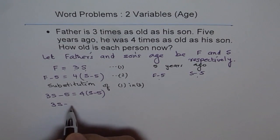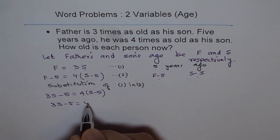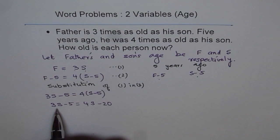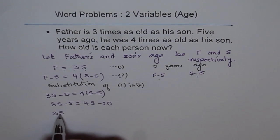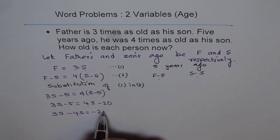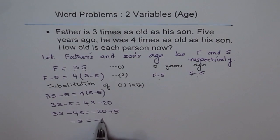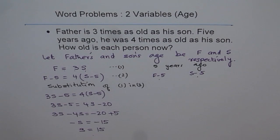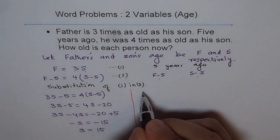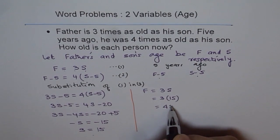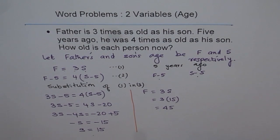Let's rearrange. 3s minus 5 equals — let's expand using the distributive property — 4s minus 20. Rearranging, we keep variables on the left: 3s minus 4s equals minus 20 plus 5. That gives minus s equals minus 15, so son's age is 15. Now we find the father's age: father is 3 times son's age, so 3 times 15 equals 45. So we know both son's and father's age.